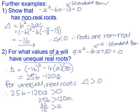It becomes 256 over 120, which simplifies to 32 over 15. So in other words, provided a is a number that is smaller than 32 over 15, the equation will have unequal real roots.